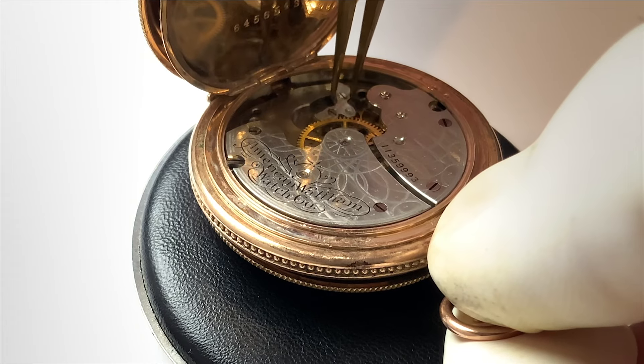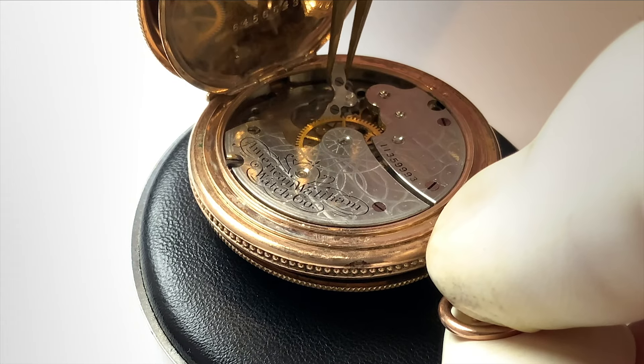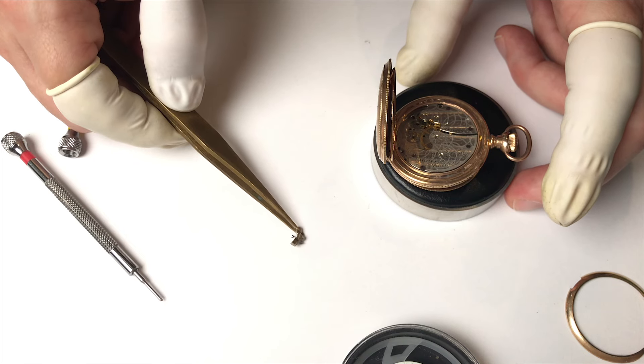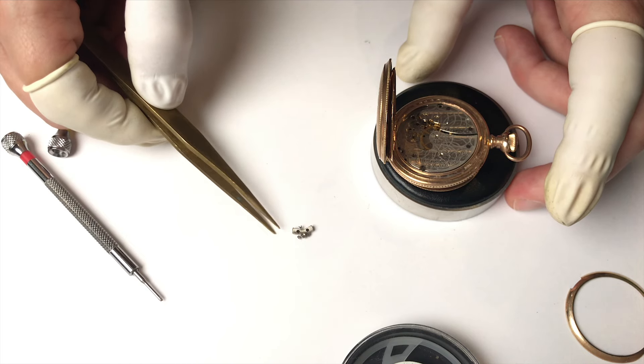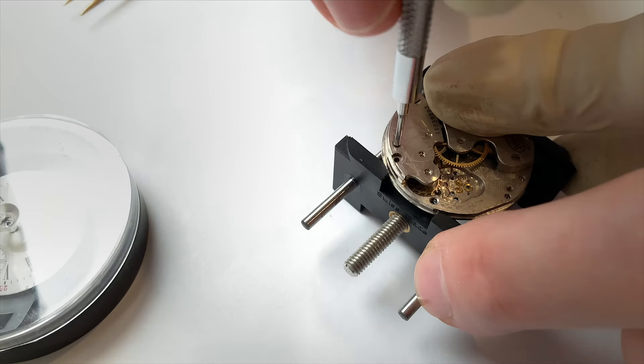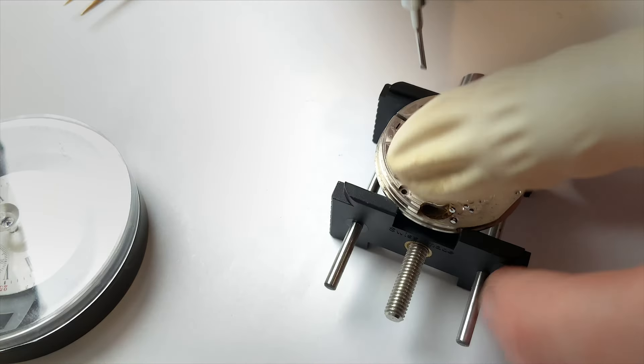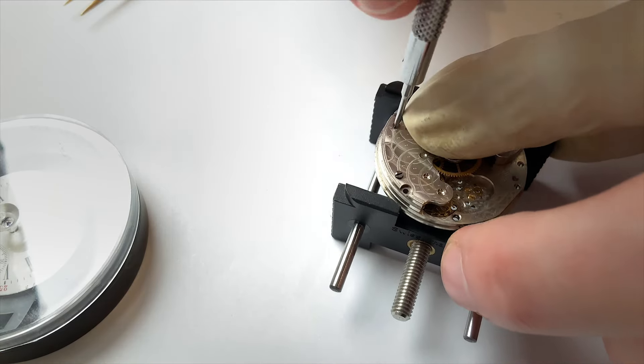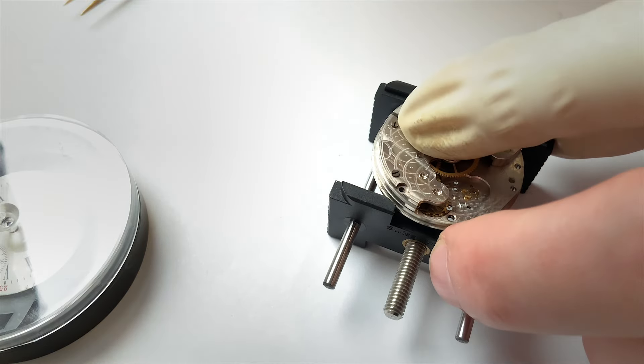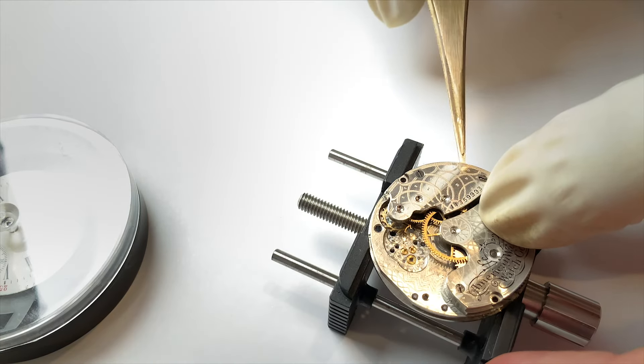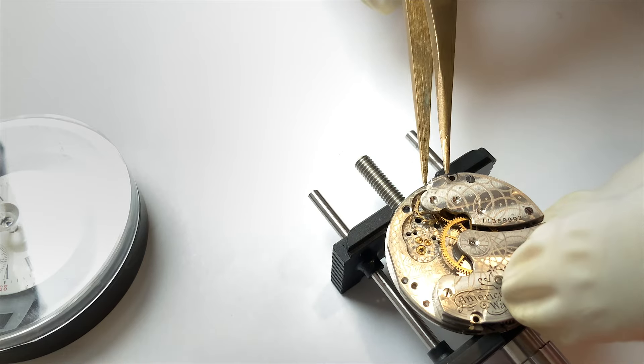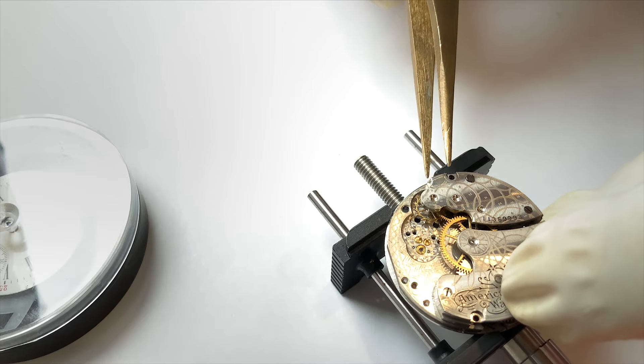That was a little clumsy, but luckily the pallet has stuck to the pallet cock, so that helped minimize some risk there. Progressing on, I'll loosen the screws on this bridge. I'm still a little curious how we're going to deal with the mainspring or the power wound up in that mainspring, but we'll figure that out when we get there.